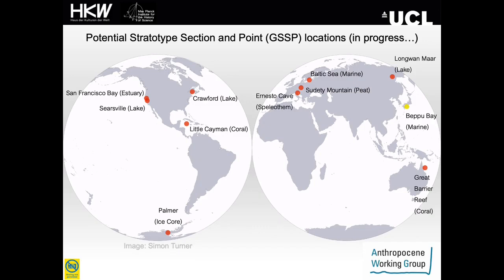Here are the locations around the planet of our potential GSSP sites. The sites are all suitable depositional environments and are geographically dispersed enough to identify globally synchronous markers of the Anthropocene. We have a selection of marine, estuarine, lake and coral cores, as well as a speleothem sequence and terrestrial peat. Site selection has been a 10-plus year process to find sites with annually resolved sediment resolution and archivable core material, each volunteered by research groups who have been actively studying these sections.